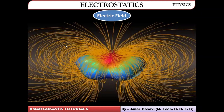Wherever the lines are close, we consider the electric field strength to be high, whereas wherever they are apart, the strength is comparatively low. Now if you try to bring some other charge or a test charge into this field, there would be a reaction from the electric field already present — either a force of attraction or force of repulsion.